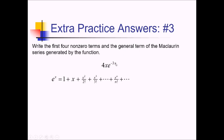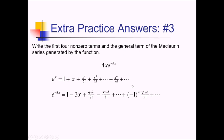Now let's apply the e to the negative 3x inner function — we have to take care of that before anything outside the e function. To do this transformation, I'm replacing all the x's in the e series with negative 3x's. We have 1, then minus 3x, then 9x squared over 2 factorial, then negative 27x cubed over 3 factorial — it's negative because negative 3 is raised to an odd power. For the general term, since signs alternate, we have negative 1 to the n times 3 to the n times x to the n over n factorial.